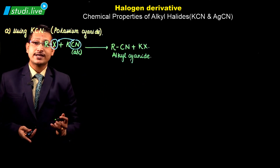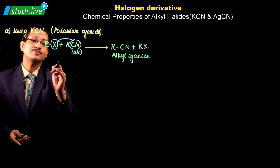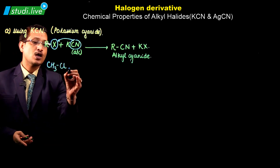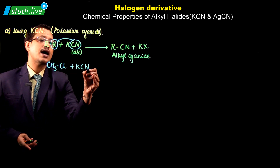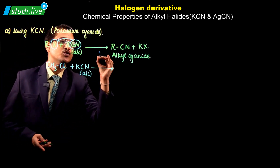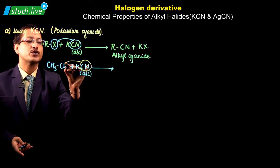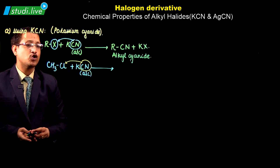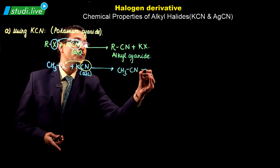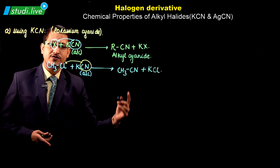Now let's take an example of this reaction using methyl chloride. So CH3Cl, which is your methyl chloride, will react with KCN alcoholic. CN is going to replace the chlorine, so I get CH3CN plus KCl.